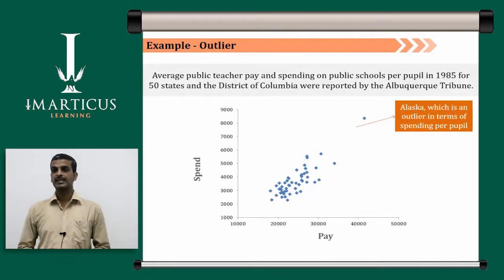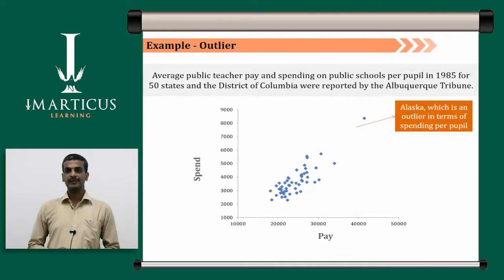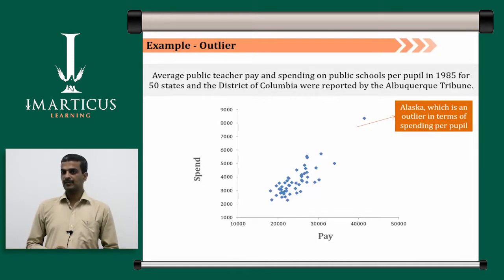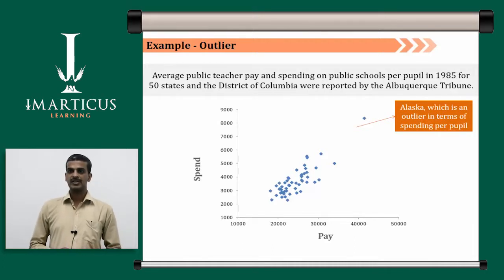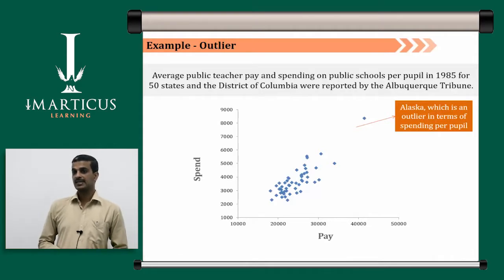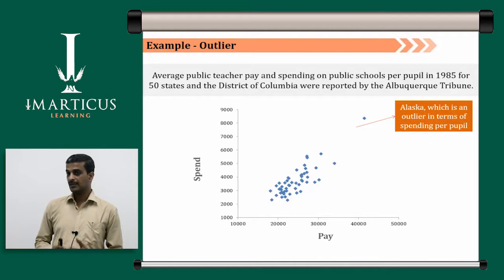An example for understanding outliers: average public teacher pay and spending on public schools per pupil in 1985 for 50 states and the District of Columbia, as reported by the Albuquerque Tribune. Looking at the spend versus pay graph, Alaska is an outlier in terms of spending per pupil — one data point is extremely far from most other points. You can either set an upper cap for this outlier or completely discard it.